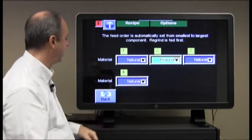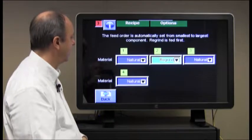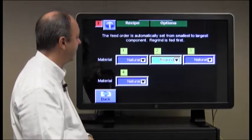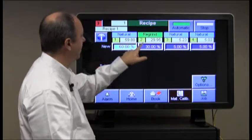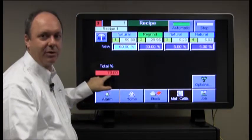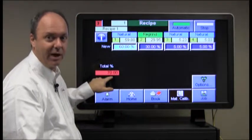We push back, and it returns to the main recipe page, which you can see now does no longer add up to 100, because the naturals don't add up to 100.